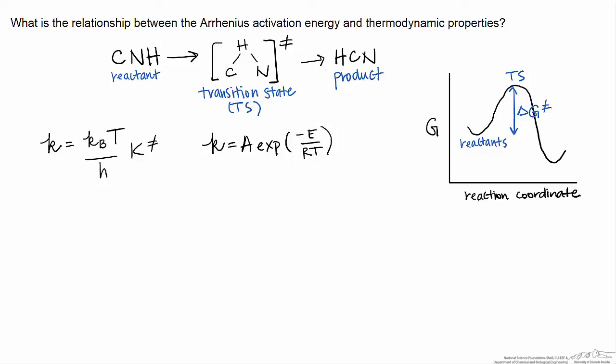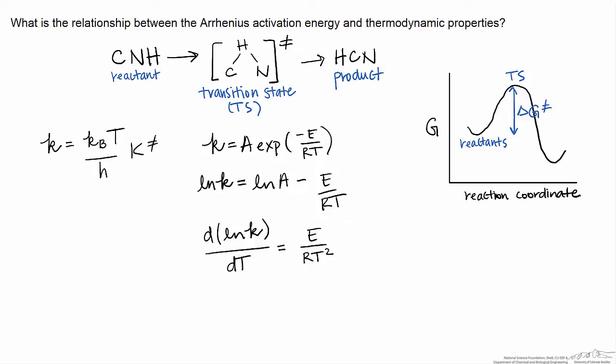To do this comparison, we'll start by looking at a slightly different definition of the activation energy. We simply take the log of both sides of the Arrhenius equation, then take the derivative of both sides with respect to temperature. When we take that derivative, the first term is constant with temperature so it becomes zero. The second term gives us E over RT squared with a sign change. So this is another way of defining the activation energy: it equals RT² times this derivative quantity.